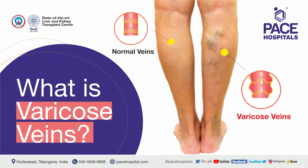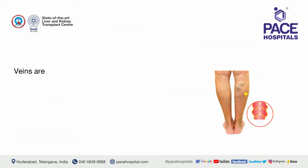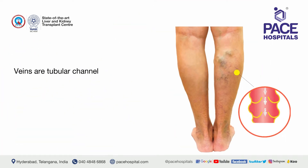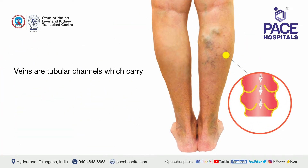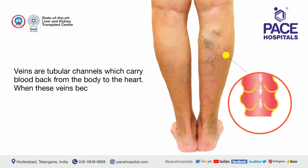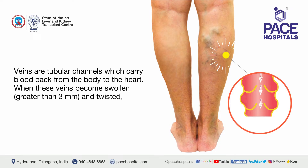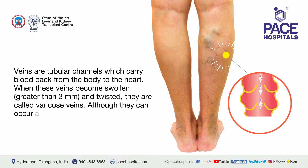What is varicose veins? Veins are tubular channels which carry blood back from the body to the heart. When these veins become swollen, greater than 3 mm, and twisted, they are called varicose veins. Although they can occur anywhere in the body, they are very common in the legs.